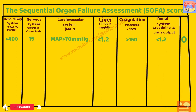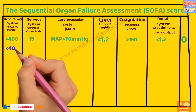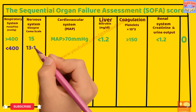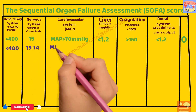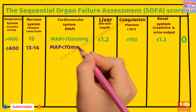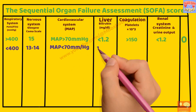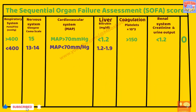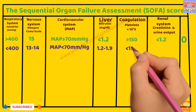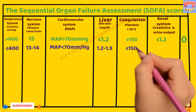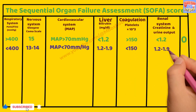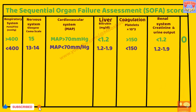If a patient has PF ratio less than 400, GCS score 13 to 14, mean arterial pressure less than 70 mmHg, bilirubin 1.2 to 1.9, platelet count less than 1,50,000, and creatinine 1.2 to 1.9, then the SOFA score will be 1.